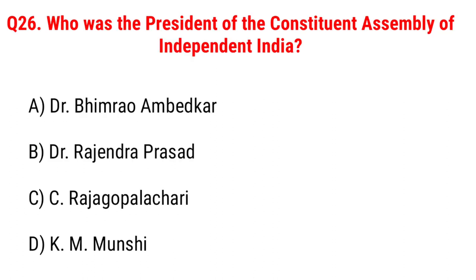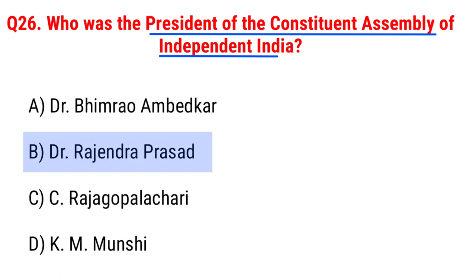Next question: who was the president of the Constituent Assembly of Independent India? Option A, Dr. Bhimrao Ambedkar; B, Dr. Rajendra Prasad; C, Rajagopalachari; D, K.M. Munshi. The right answer is Option B, Dr. Rajendra Prasad. Dr. Rajendra Prasad was the president of the Constituent Assembly of Independent India.